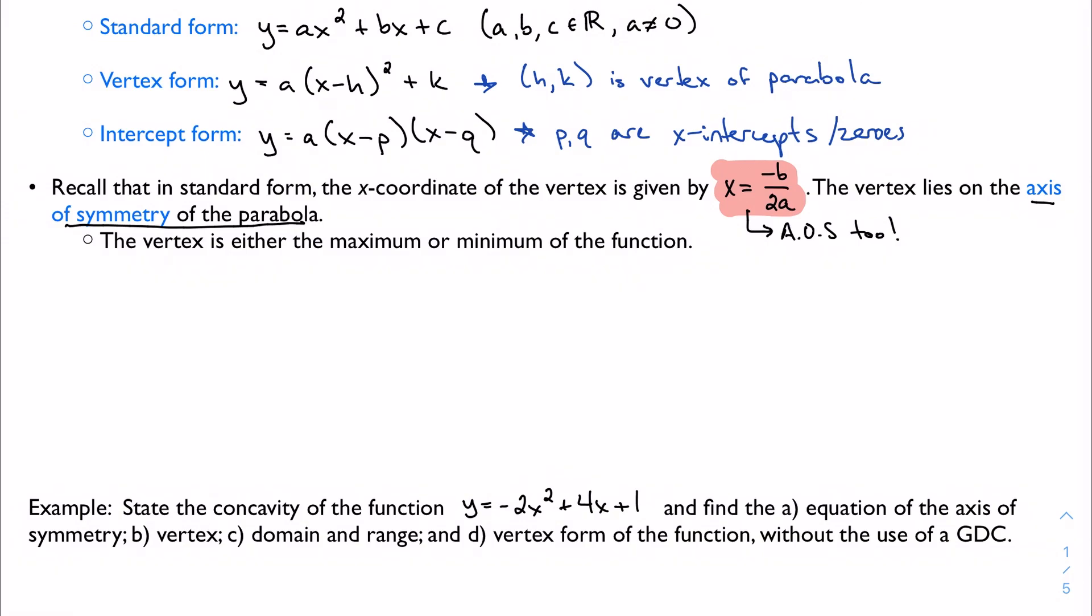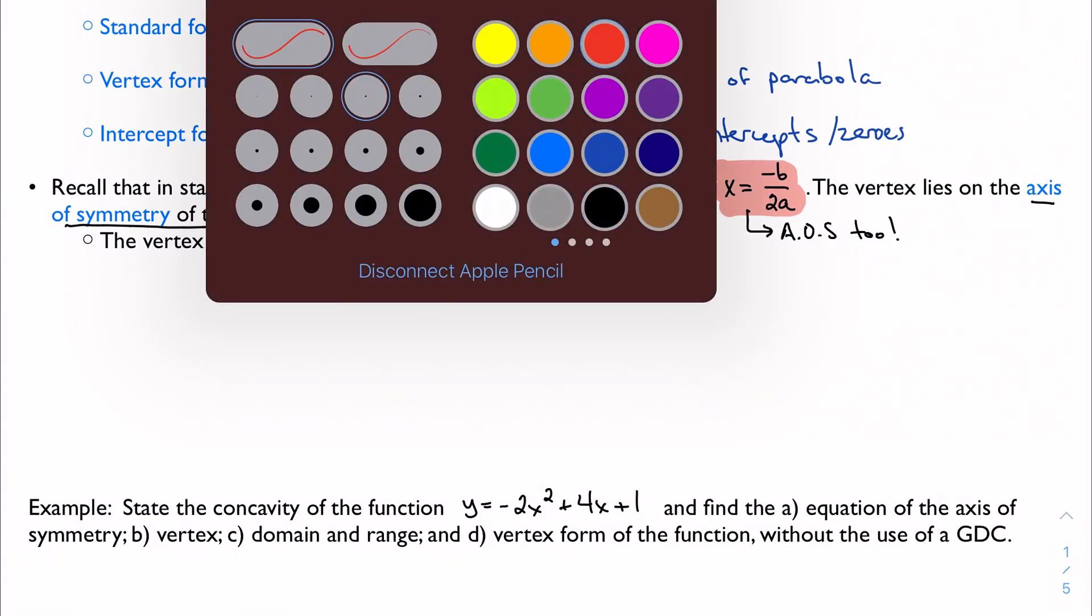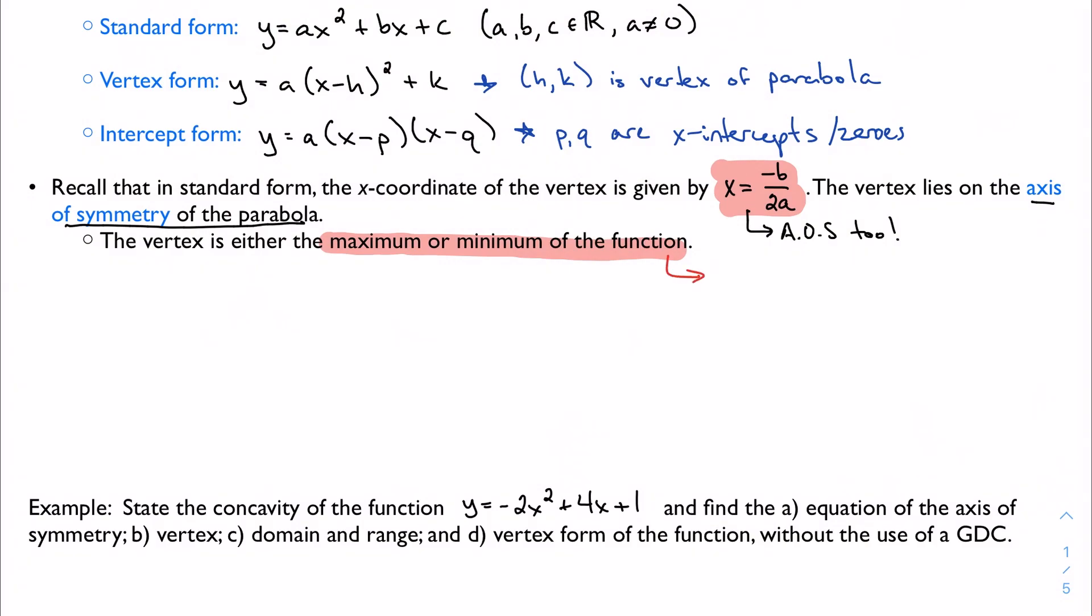And because it lies on the axis of symmetry, and because it is the vertex, that point is also either the maximum or the minimum of the function. And the next question, of course, is how do I know which is which? Well, it depends on the concavity of the function, which is determined by the sign of a.